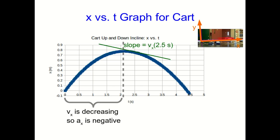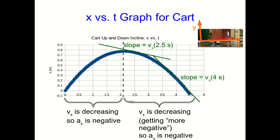Now let's look after it turns around. At 2.5 seconds, the slope of that line should be vx, and at about 4, the slope of that line is vx. Notice it's getting steeper, but it's a negative slope, and so that means the slope is getting more negative, and so again ax is negative.